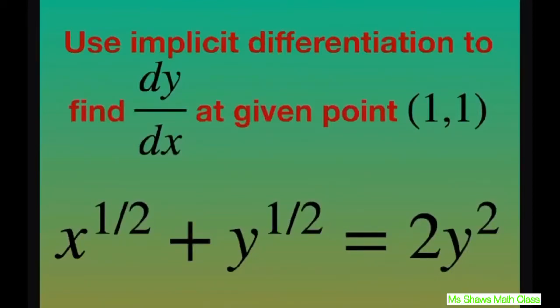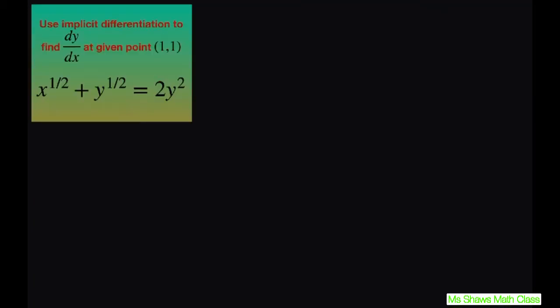Hi everyone. We're going to use implicit differentiation to find dy divided by dx at a given point (1,1). We're differentiating with respect to x. This is our equation. So let's go ahead and start.